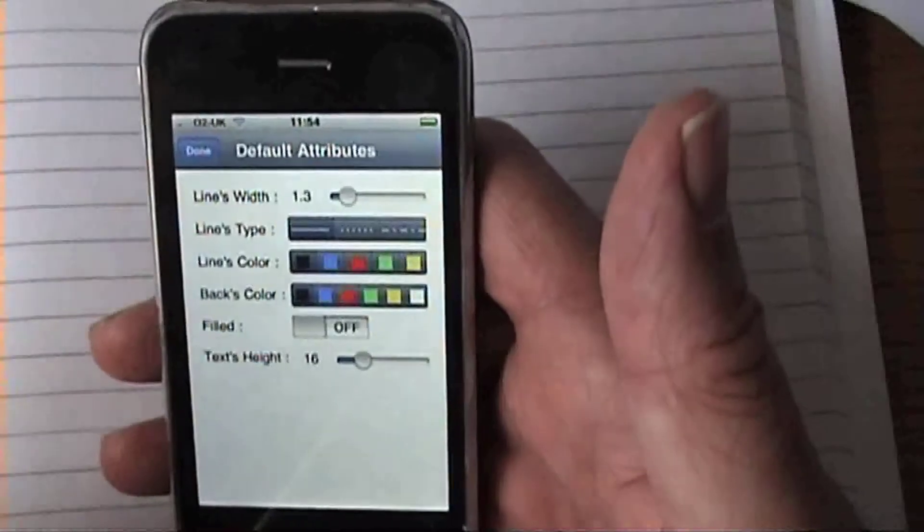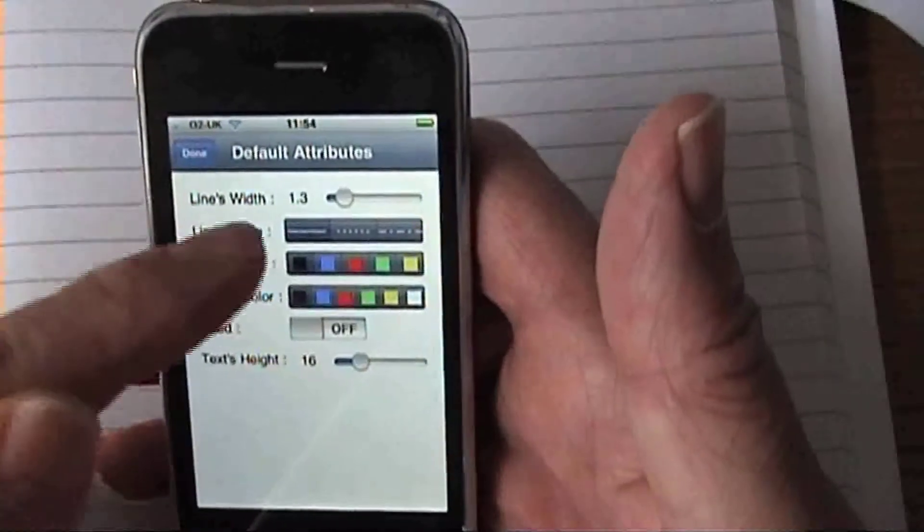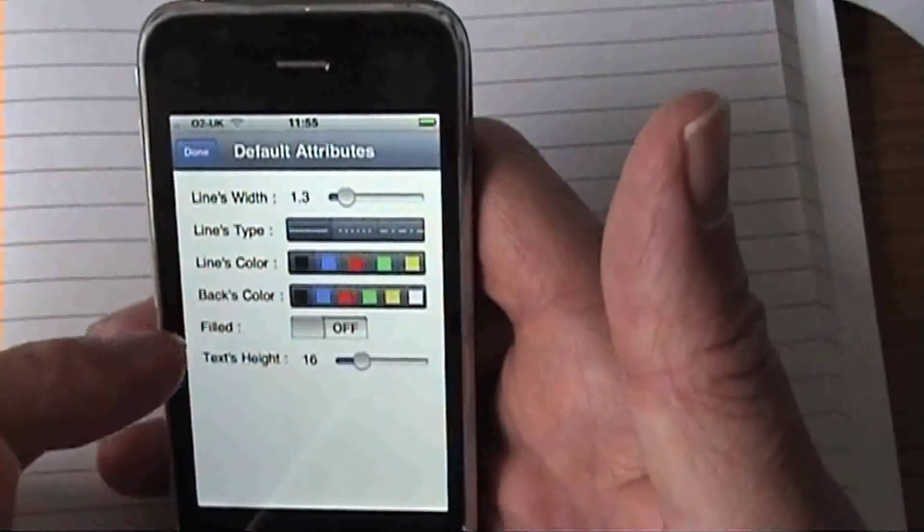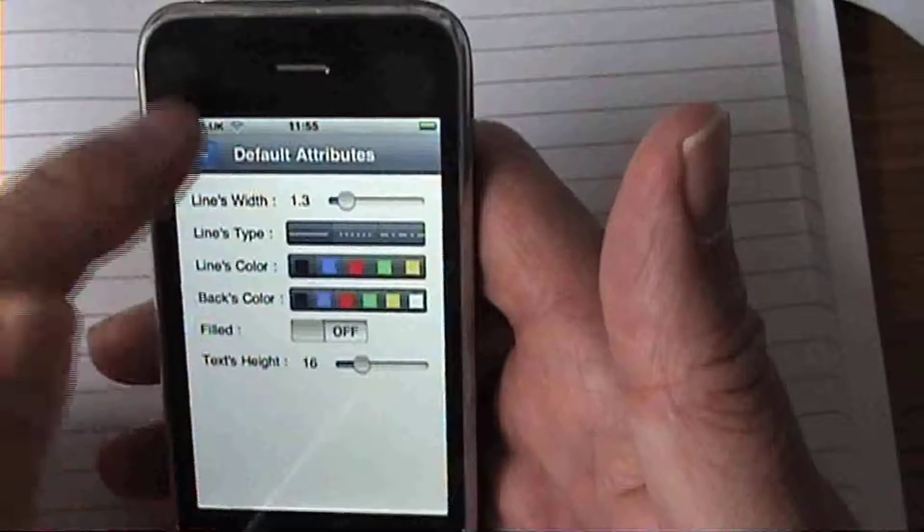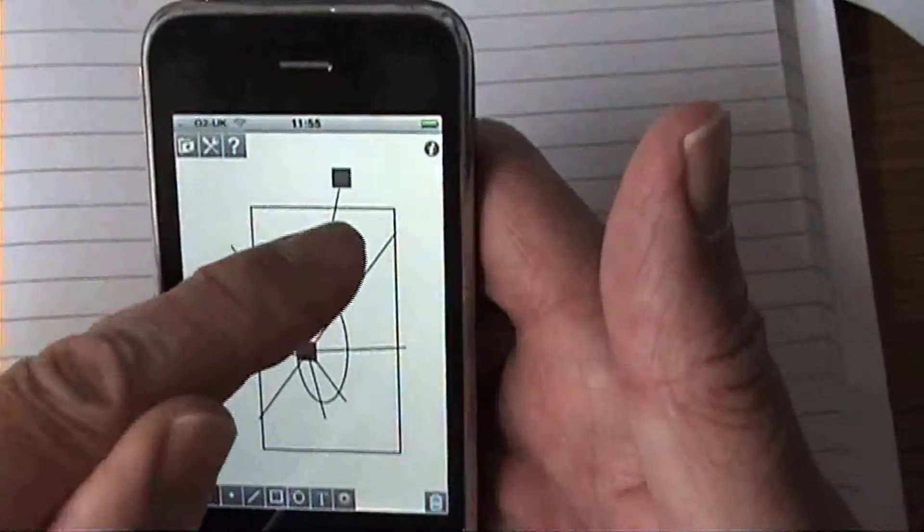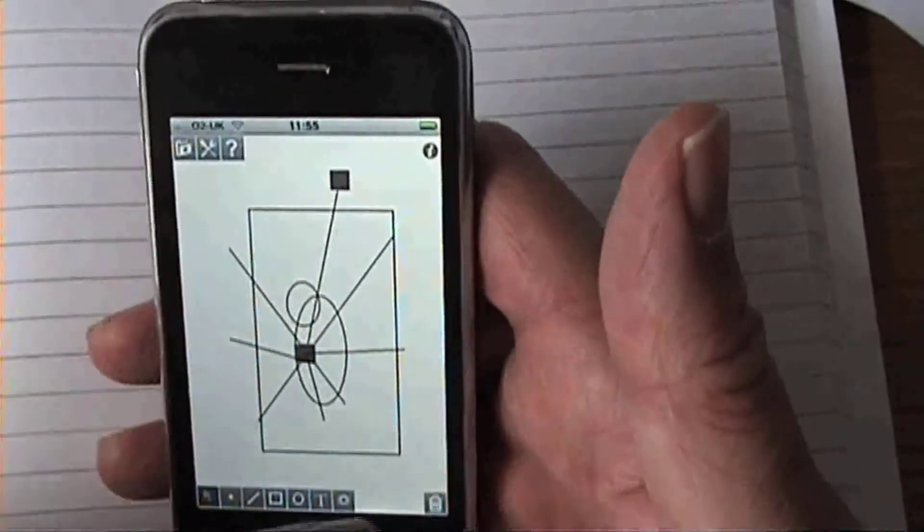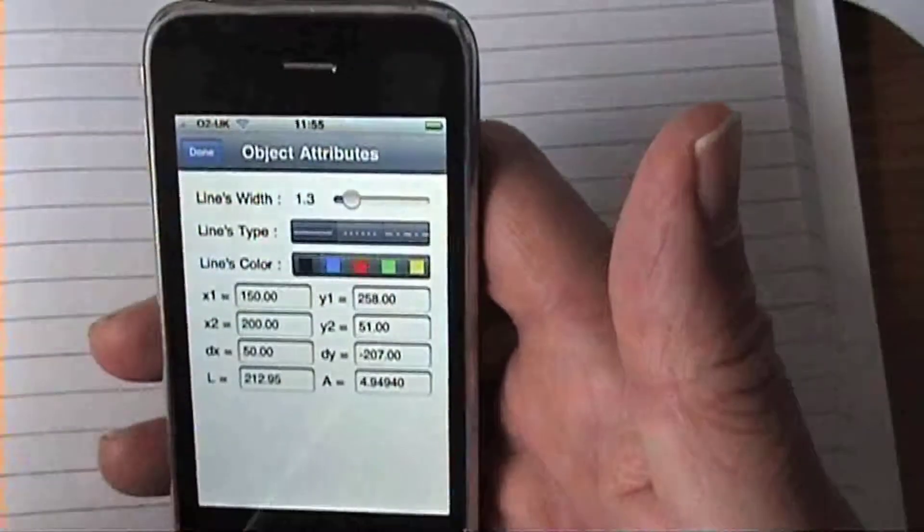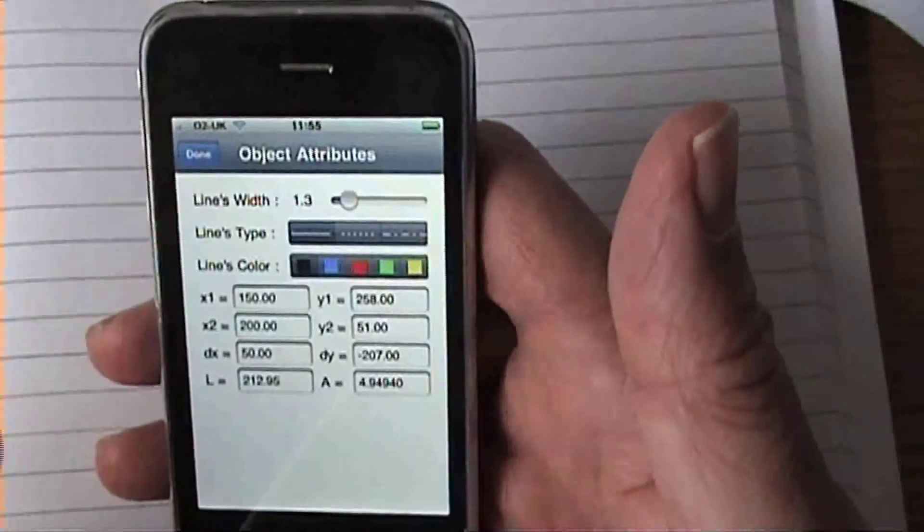Now if I come into something here which looks at the line width and line type, line colors, background, is it filled or isn't it filled, and the text height. Now watch what happens when I highlight something and go back into that. All of a sudden now I've got all this information down here.